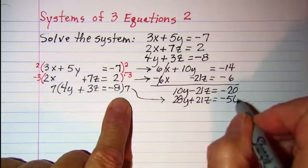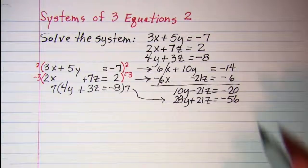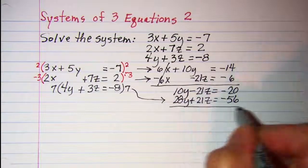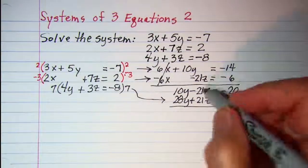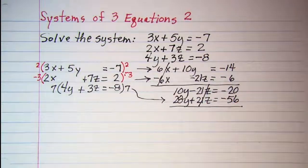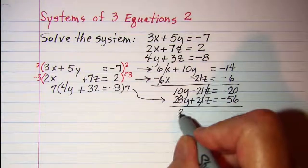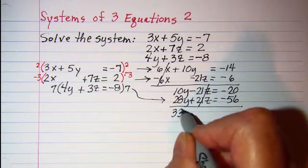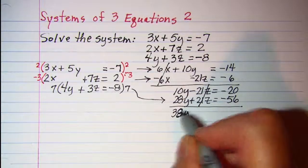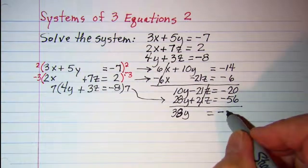Adding these together, the -21z and the +21z cancel off, and I have 38y = -76.